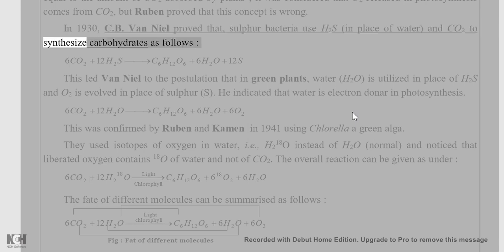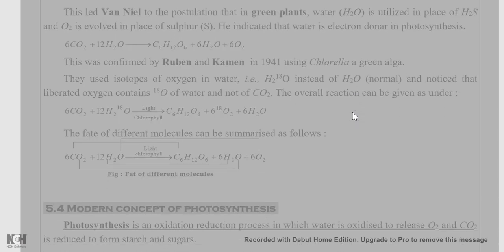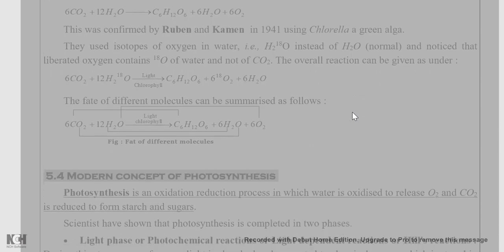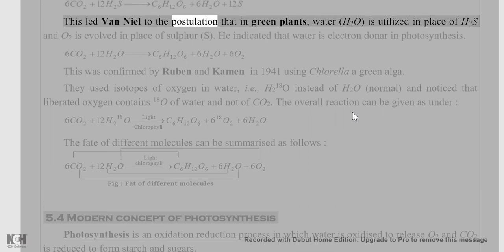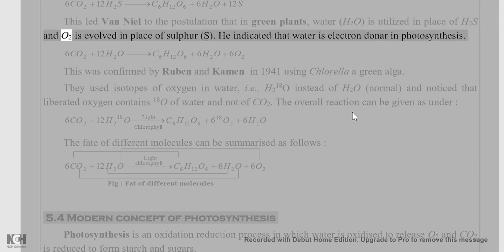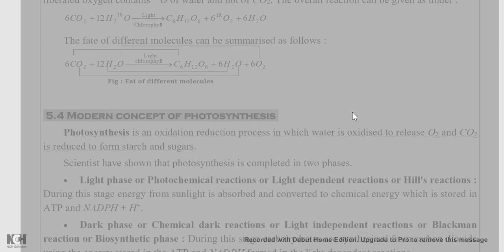Van Neel showed that sulfur bacteria use H2S and CO2 to synthesize carbohydrates. This led van Neel to the postulation that in green plants, water (H2O) is utilized in place of H2S, and O2 is evolved in place of sulfur (S). He indicated that water is the electron donor in photosynthesis.